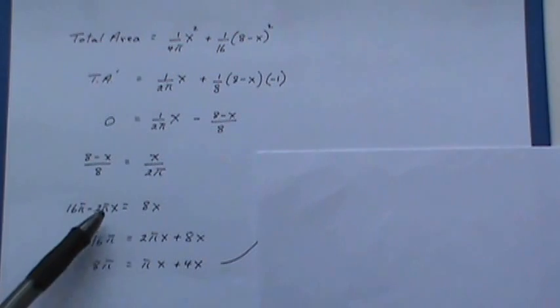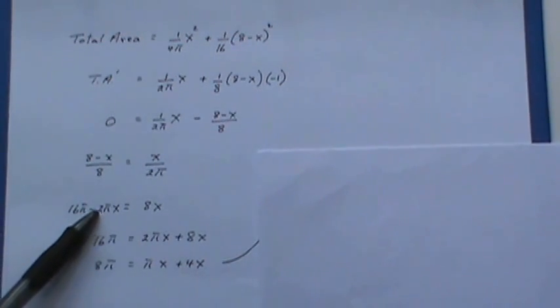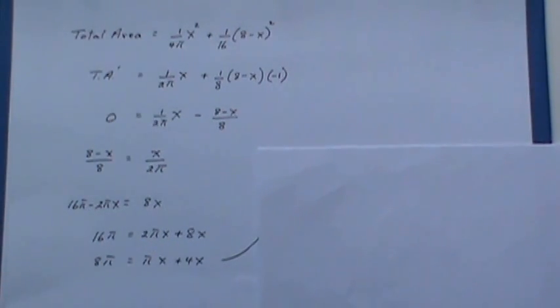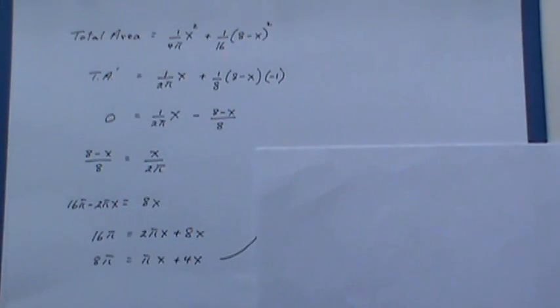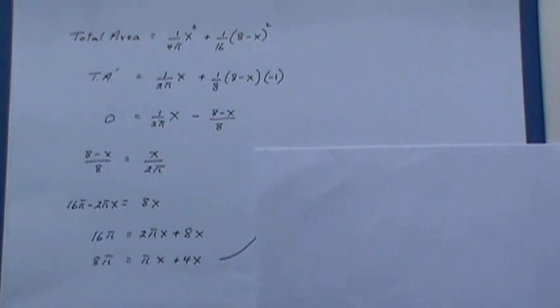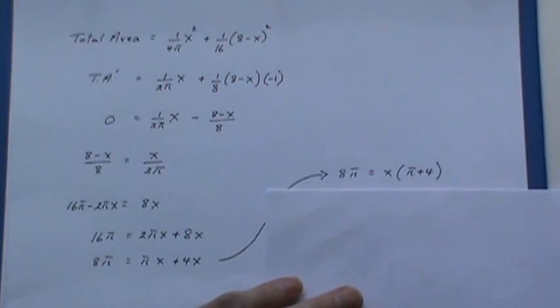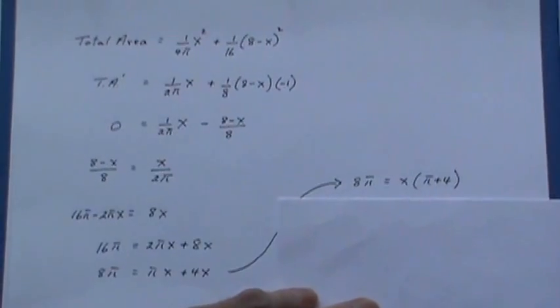That's what I get and I move this term over because I want the X's on one side. At this point I noticed I could divide through by 2. I could have done that earlier. It just keeps the expression as simplified as possible. Factor out the X and then divide both sides by π plus 4.